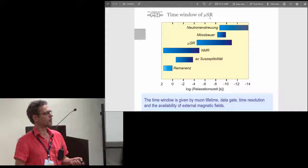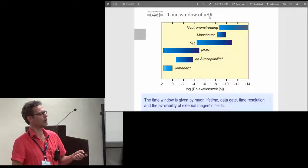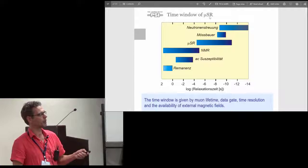The time window for fluctuations of muons fills the gap between NMR and these more classical methods and neutron scattering which are much faster.